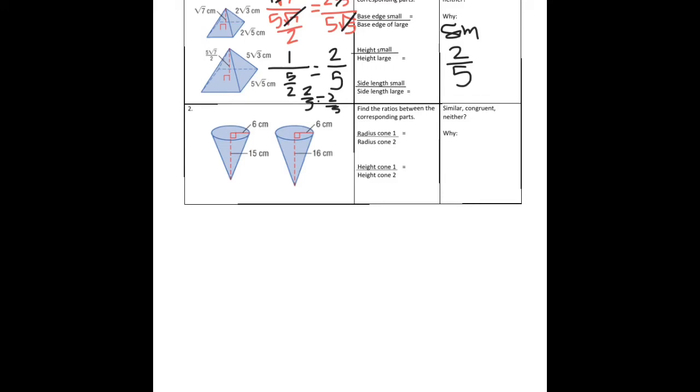If you look at the next shape, I have a radius of 6 compared to a height of 15, radius of 6 compared to a height of 16. So I know that they're not congruent. I also know that they don't have the same similarity ratio. 6 over 6 is not the same as 15 is to 16. So these are not similar, not congruent.